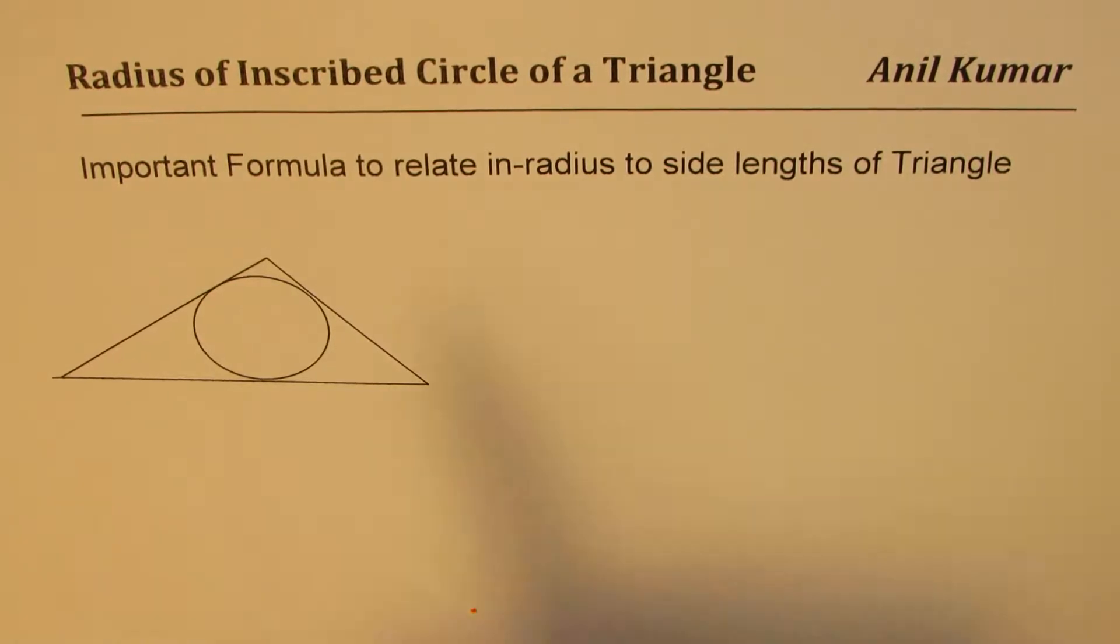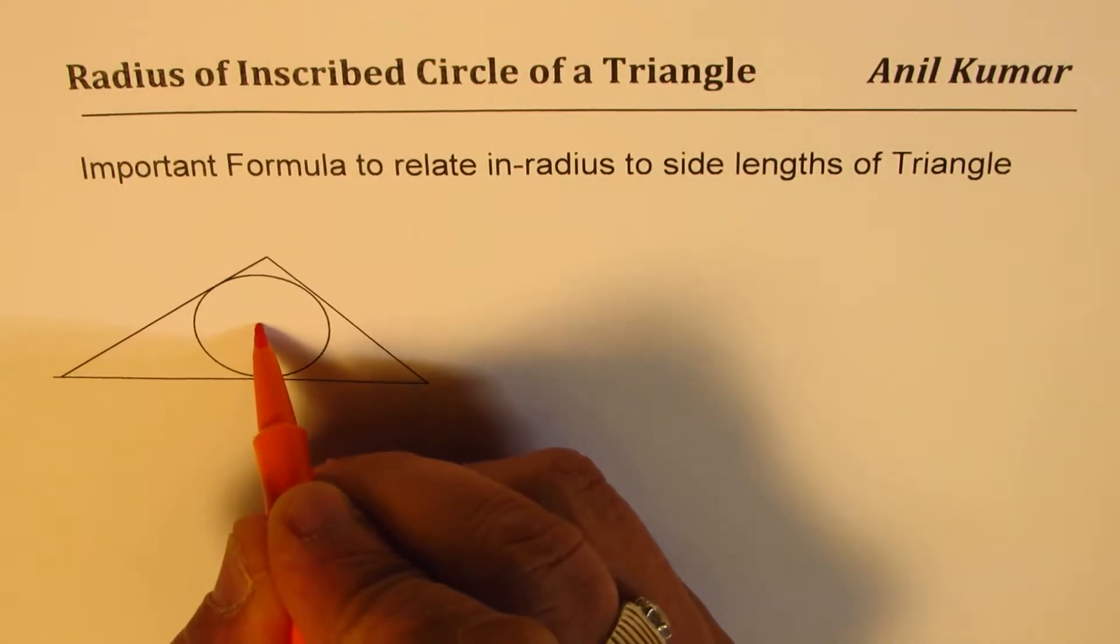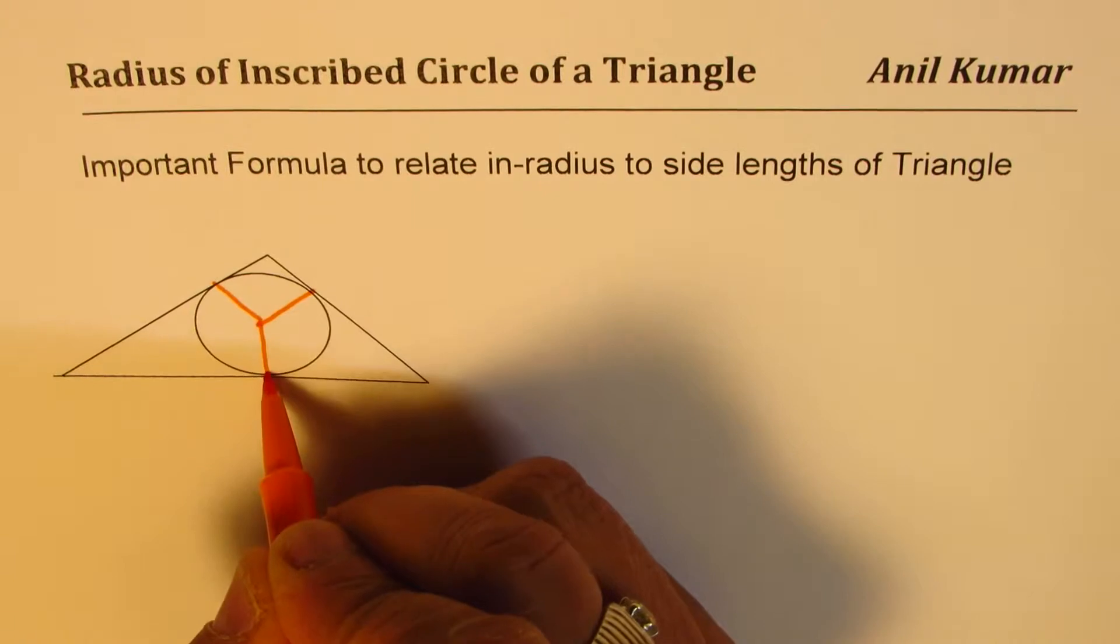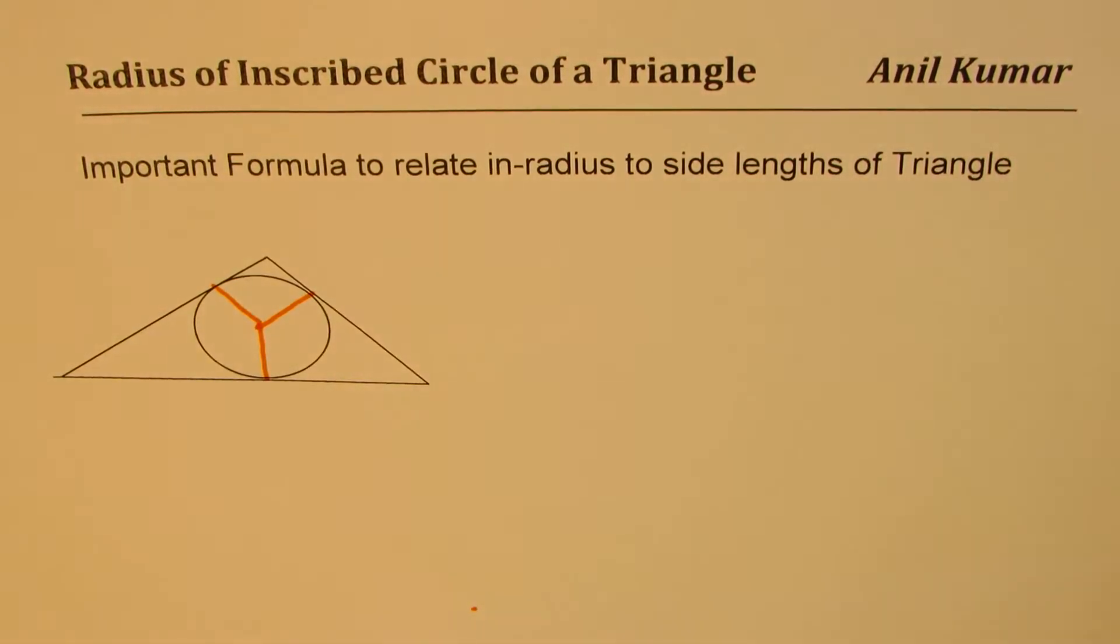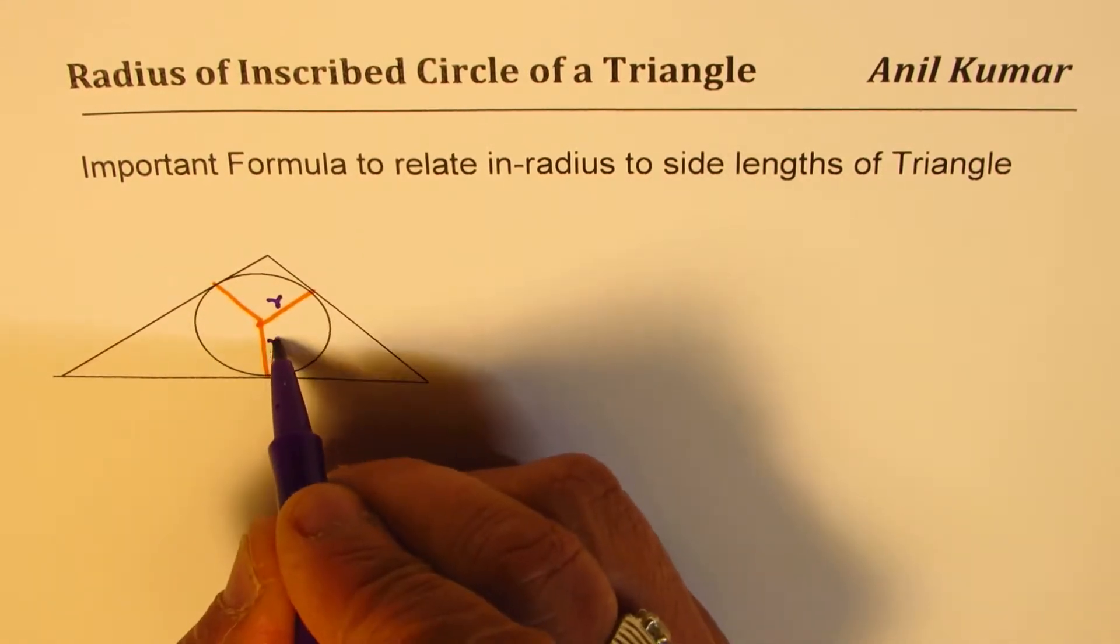When I say inradius, that means we have a circle inside a triangle, inscribed in a triangle, and inradius is the radius of this circle which is inscribed. So that is the radius which we are talking about. We want to relate this radius with the sides of the triangle.